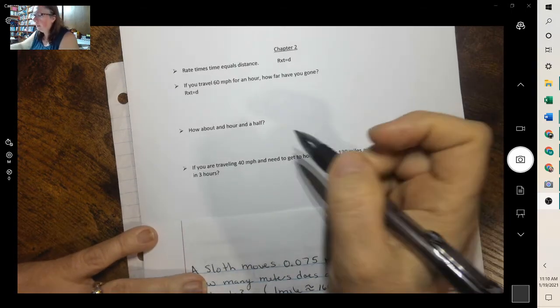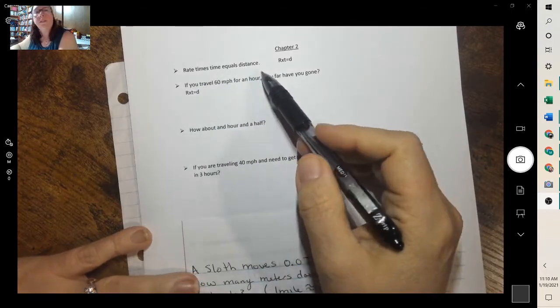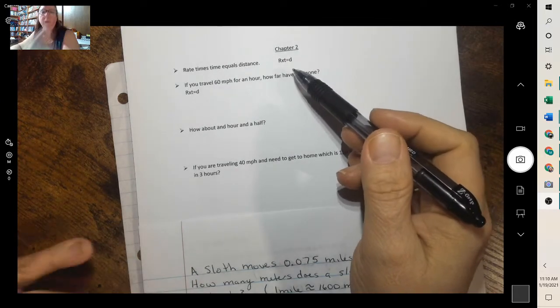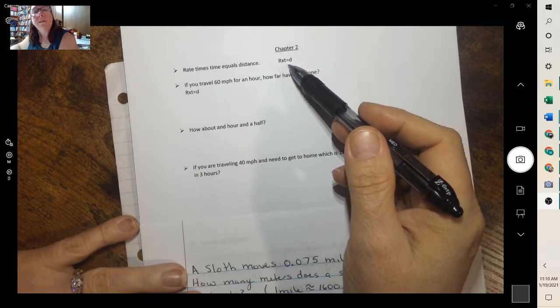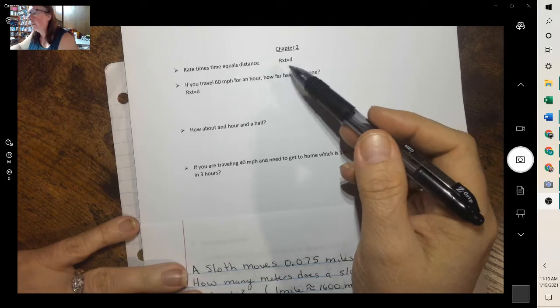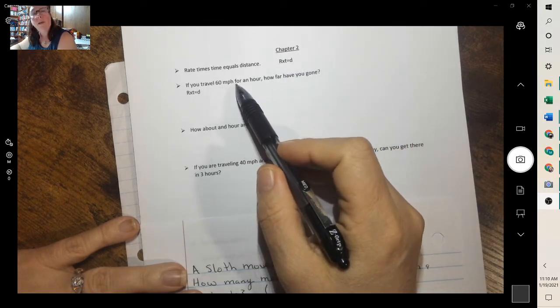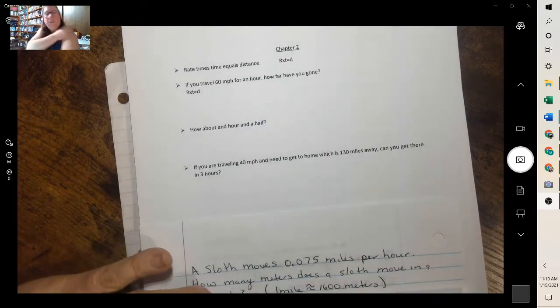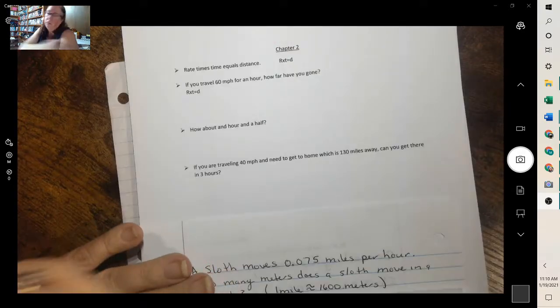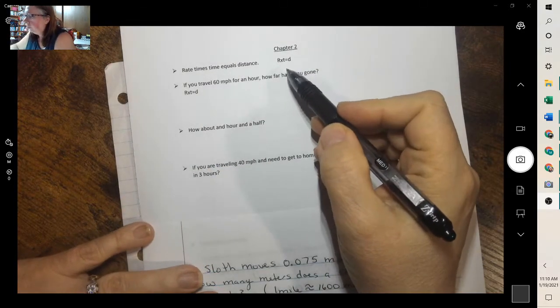Hello, I'm Mrs. J, and today we're going to work on rate times time equals distance. When you're talking about rate times time equals distance, the rate is a change and it will have two units, like miles per hour or inches per second.